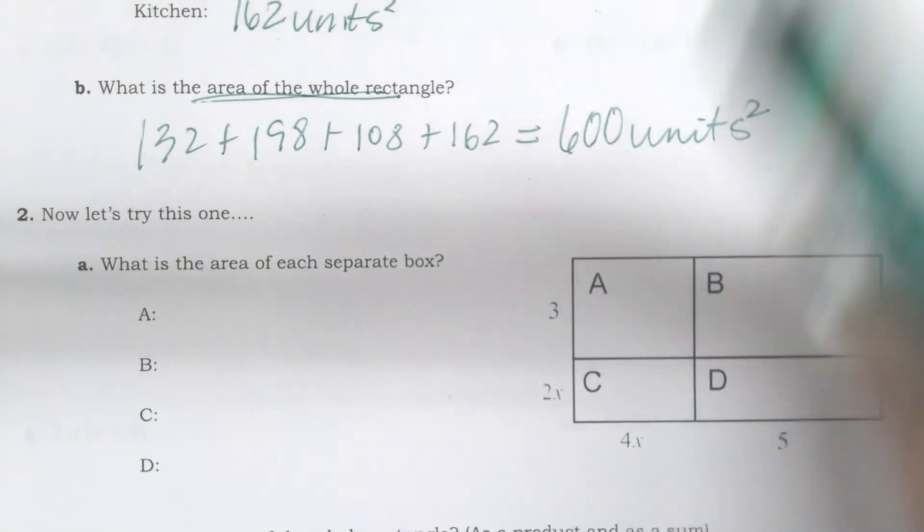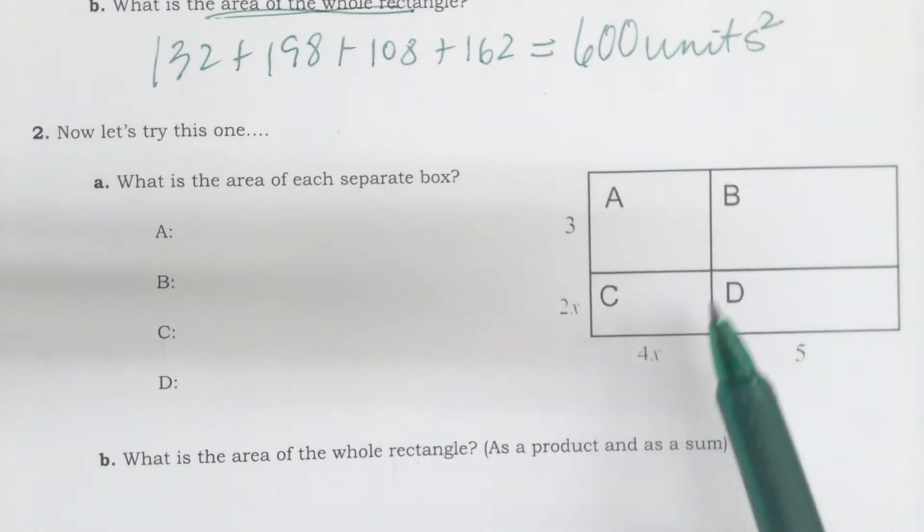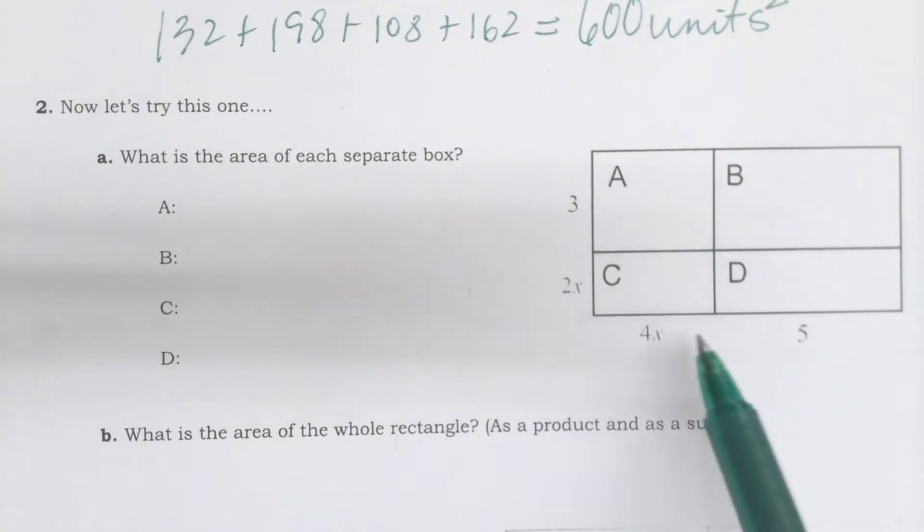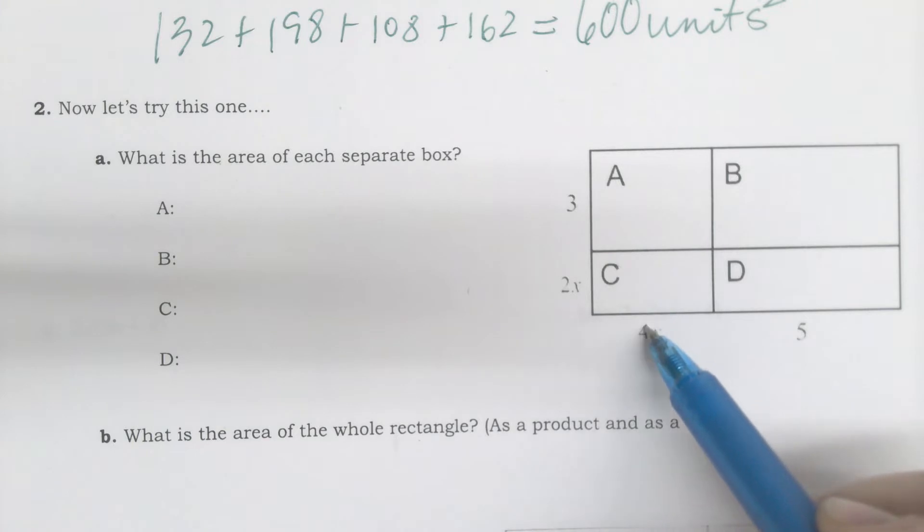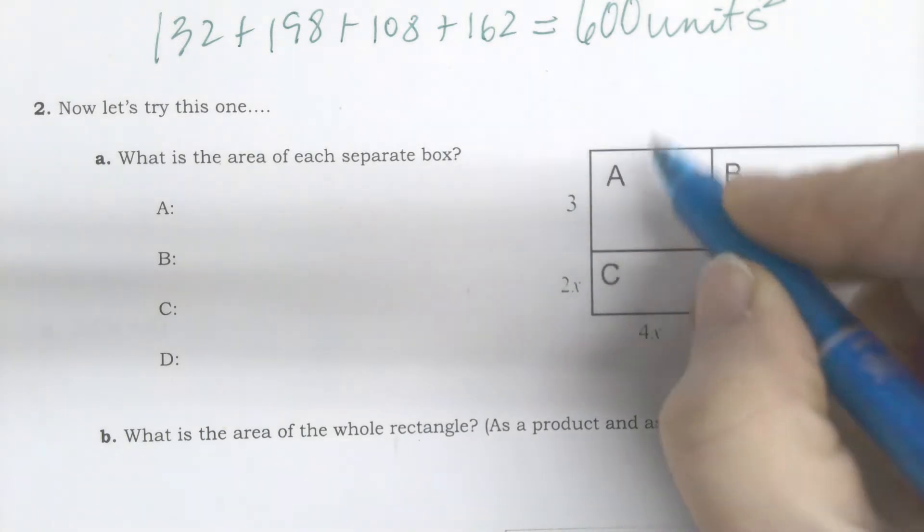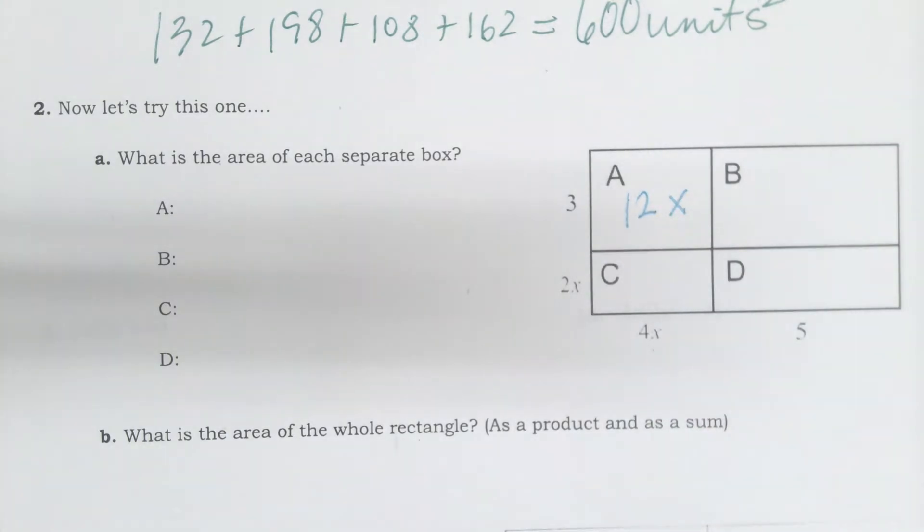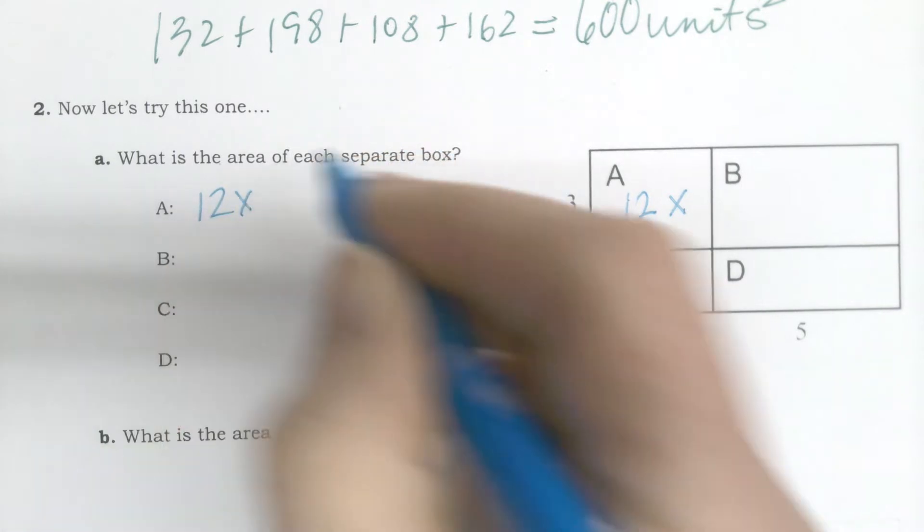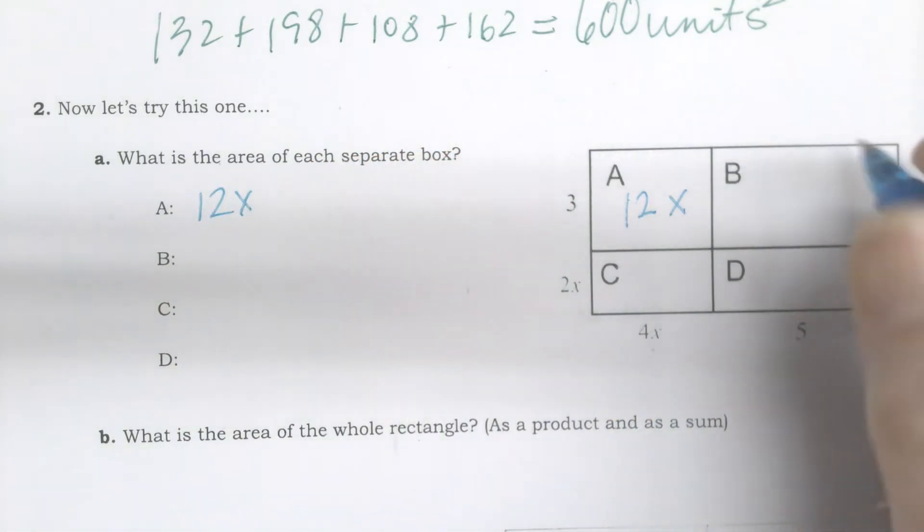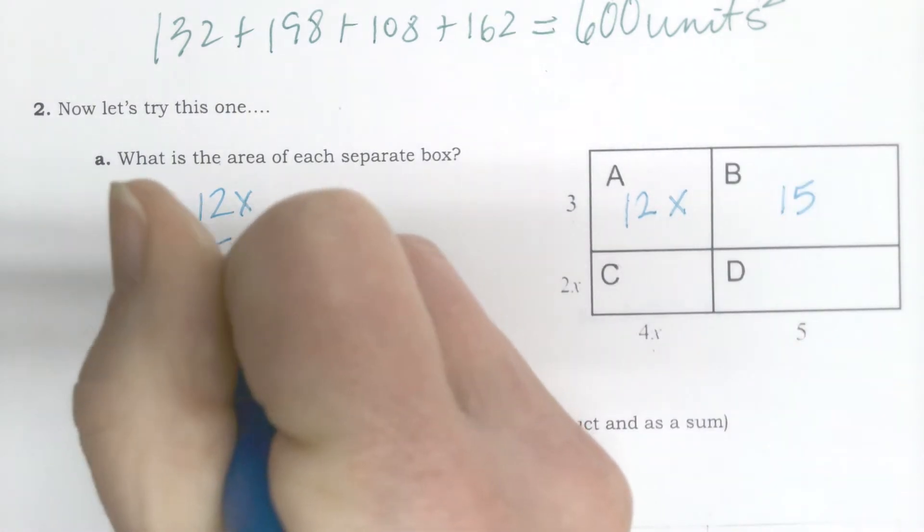Now we're going to try it where we have letters involved. Same concept, but remember when you multiply, we learned our power rules. When we multiply two things, I can only multiply the numbers together. So 3 times 4 is 12x. 3 times 5 is 15.